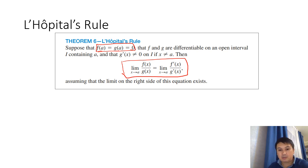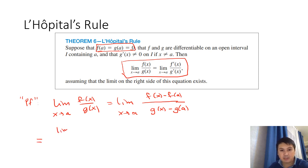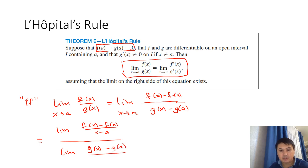I won't prove the theorem, but here's the idea of the proof. Starting with lim x→a f(x)/g(x): since f(a) and g(a) are both 0, I can insert −f(a) and −g(a) without changing the limit. Then I can split this as [f(x) − f(a)]/(x − a) divided by [g(x) − g(a)]/(x − a) — I'm dividing both numerator and denominator by the same factor x − a.